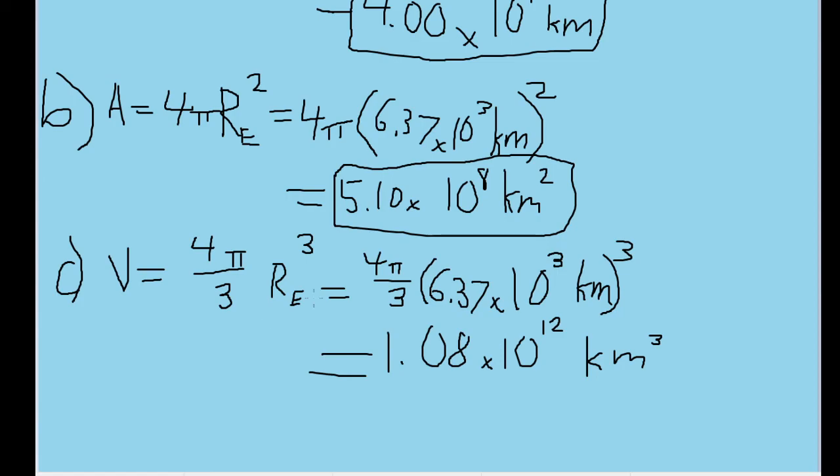Now the formula for the volume of a sphere is 4 pi divided by 3 times the radius cubed. So once again, we are plugging in the radius of the Earth into r. And this time we get an answer of 1.08 times 10 to the 12th power cubic kilometers. And this is our approximation for the volume of the Earth.